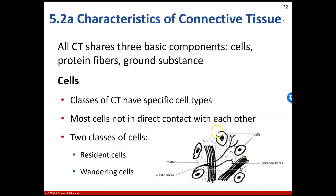When we think about the cells, we have classes of connective tissues that are going to have specific cell types. Depending on if it is bone, it'll have bone cells. If it's cartilage, it'll have cartilage cells. If it is blood, it will have blood cells and so forth. Most of the cells are not in direct contact with each other. There are going to be two classes of cells: either resident cells that stay within the tissue, or wandering cells that are able to move throughout the body.